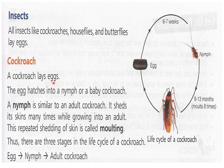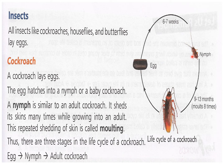A cockroach lays eggs. The egg hatches into a nymph, or a baby cockroach. When the egg hatches, the baby cockroach comes out — and six to seven weeks after the egg is laid it comes out of the egg. A nymph is similar to an adult cockroach — a little smaller, but just like the adult cockroach.